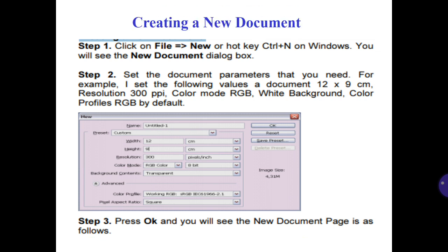Creating a new document. Step number 1: click on File and then New, or use the hotkey on Windows. You will see the New Document dialog box. Step number 2: set the document parameters that you need. For example, I set the following values — document size 12 by 9 cm, resolution 300 ppi.